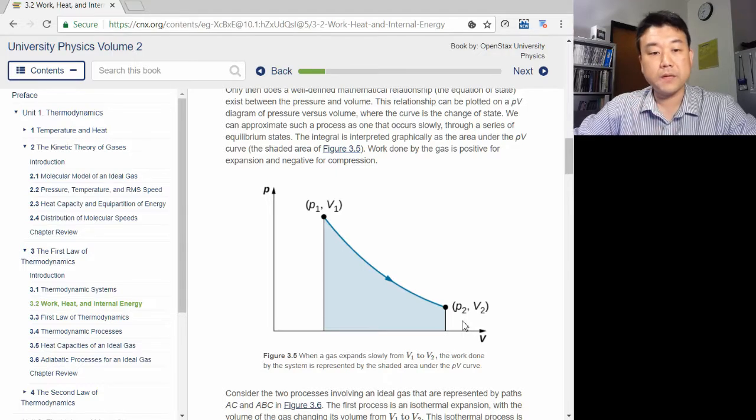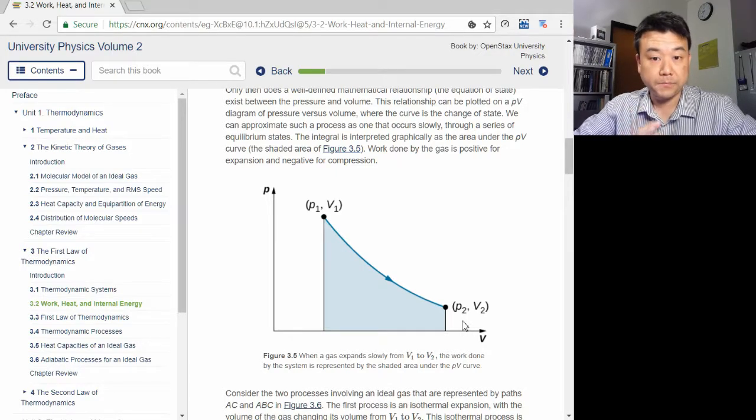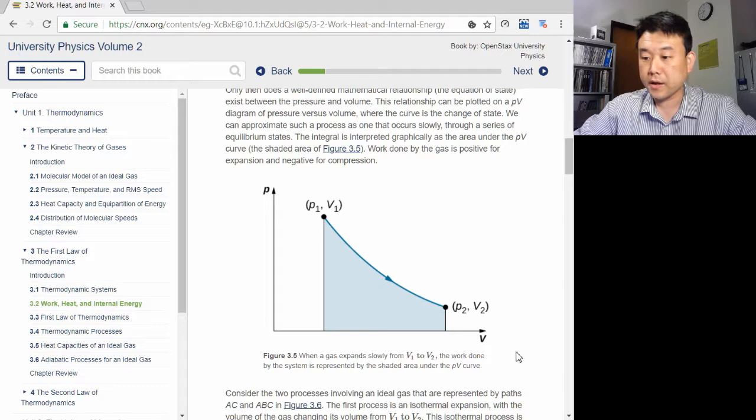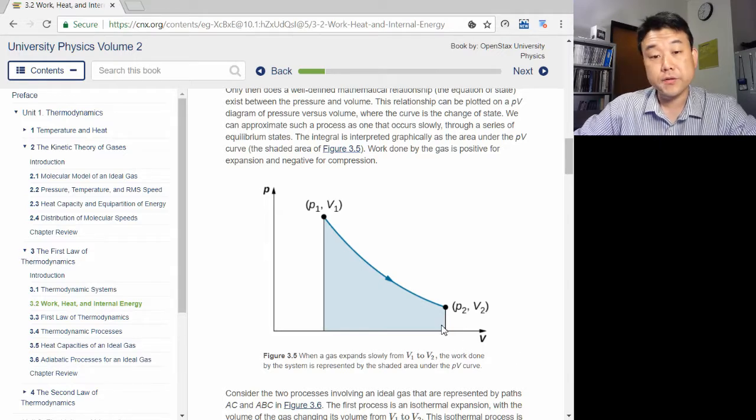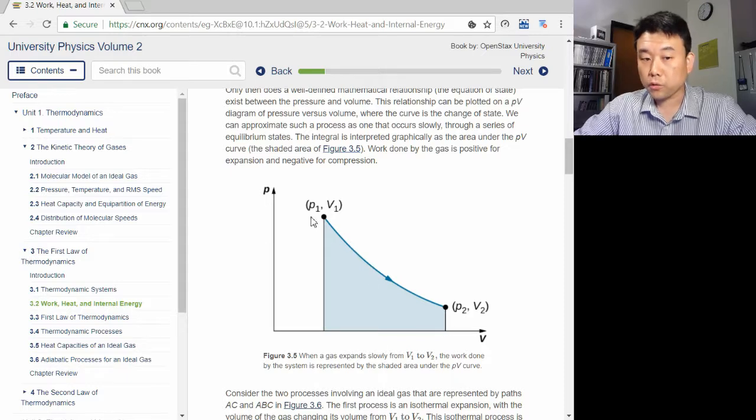This is why you are going to be seeing a lot of pressure-volume diagrams. It plots complete information about your system. Once you know pressure and volume, you can figure out the temperature from the ideal gas law.